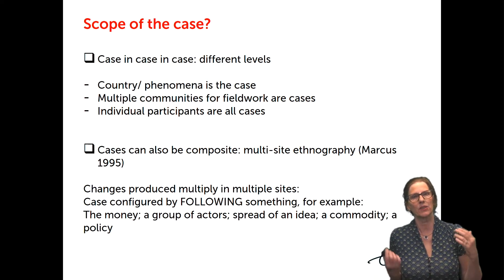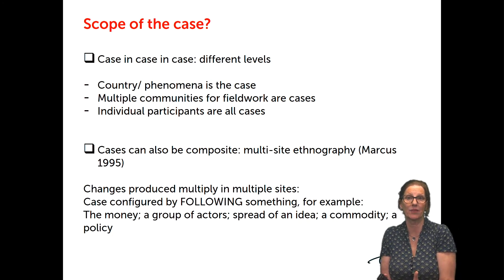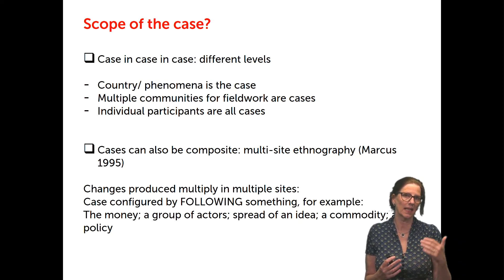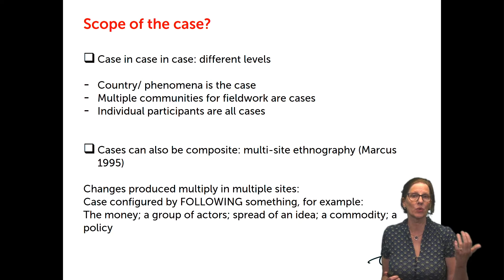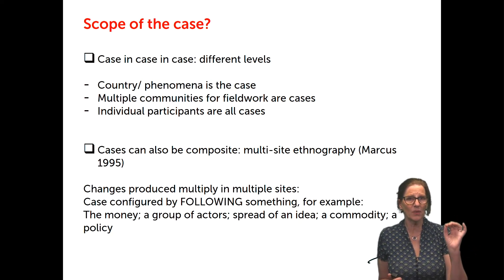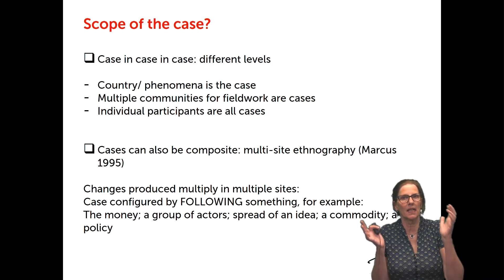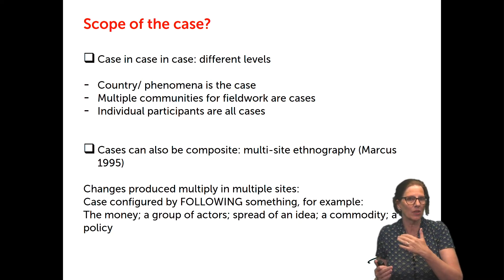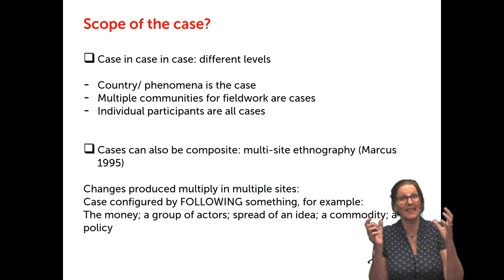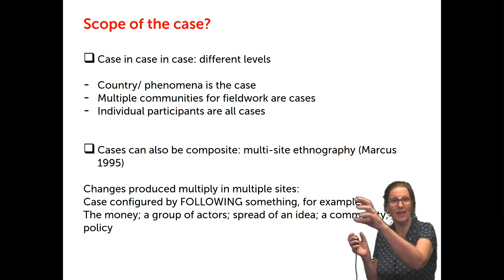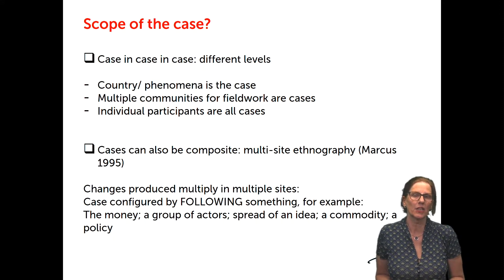Another complication in defining the scope of a case is that sometimes a case is not structured as bigger, smaller, specific levels, but cases can be composite — studied at multiple sites. There is a very famous article by Marcus (1995) that talks about multi-site ethnography. We are interested in a particular change that plays out and is produced at multiple sites. If you want to study that case, you cannot go to one single community; you have to go to multiple sites that together form your case.